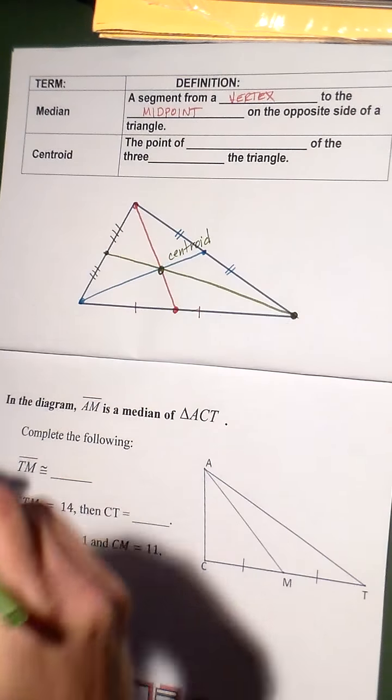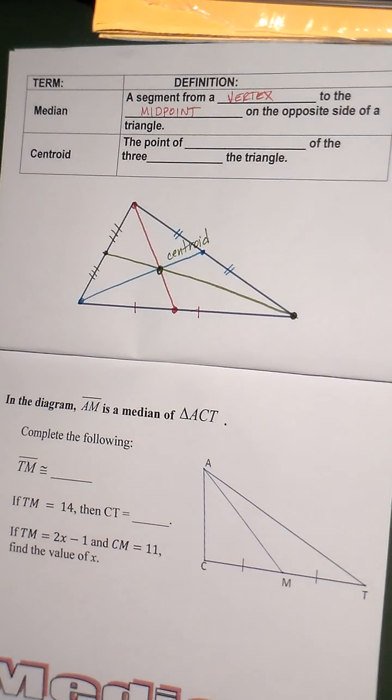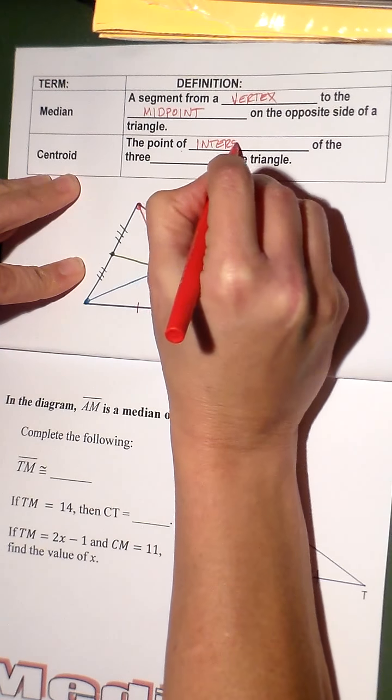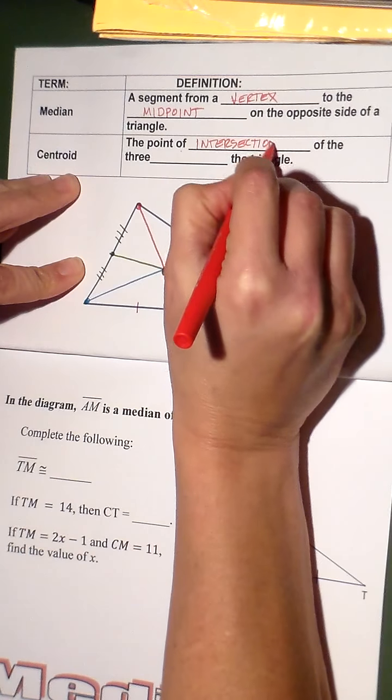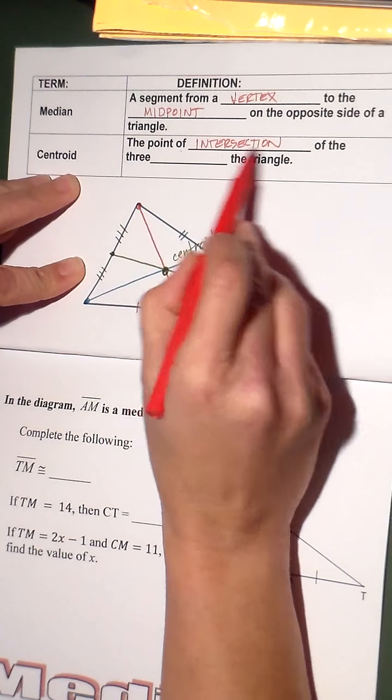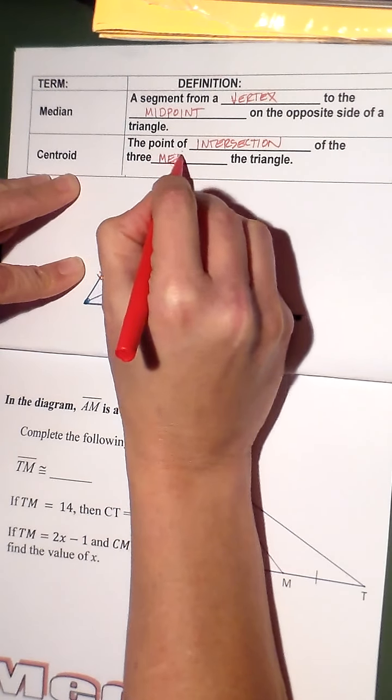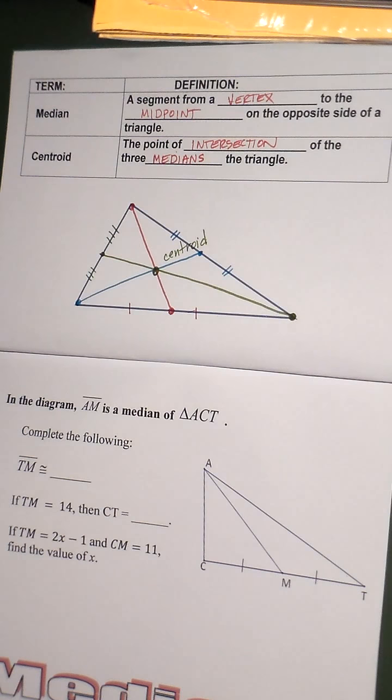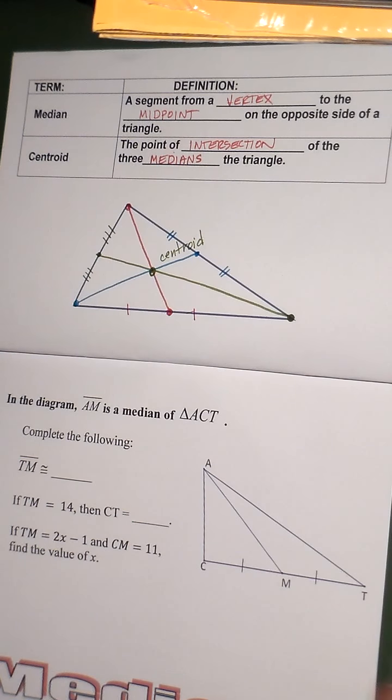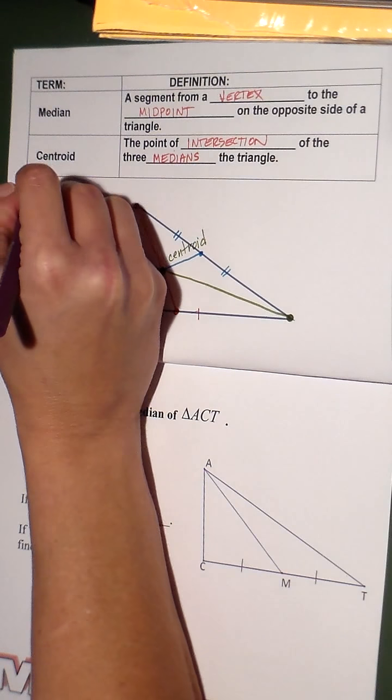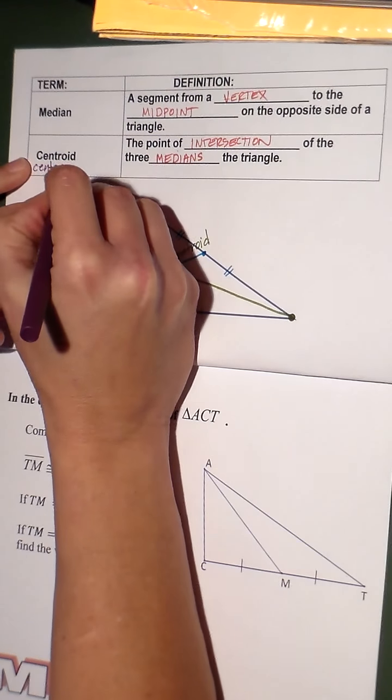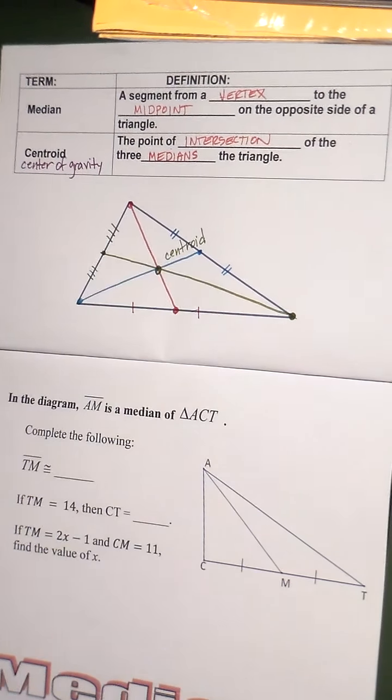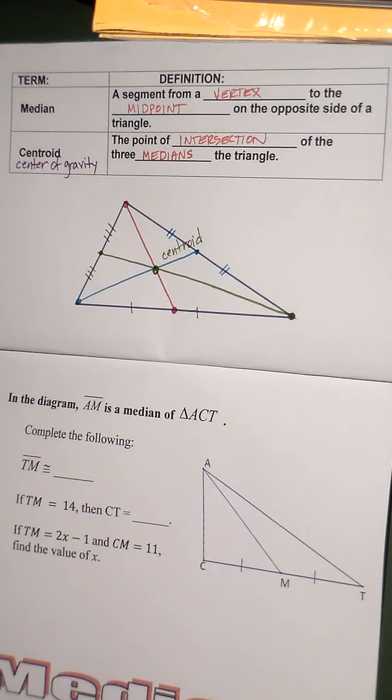or the center of gravity. So the point of intersection of the three medians is called the centroid. Now, why is it called the centroid? It's called the centroid because the centroid is the center of gravity. If I wanted to balance this triangle on a single point, the centroid is the center of gravity.